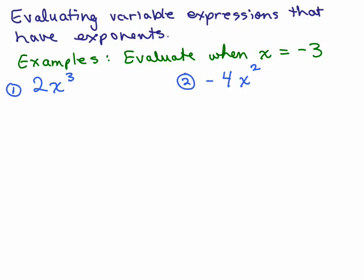So the first one, 2x cubed. There are two ways to do this. The first way is to start by writing the meaning of 2x cubed, which would be 2 times x times x times x.